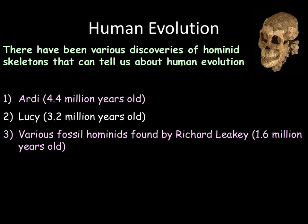There have been various discoveries of hominid skeletons over time that tell us about human evolution. For your GCSE you need to know about three different discoveries: the first is Ardy, whose skeleton dates to about 4.4 million years ago; the second is Lucy, whose skeleton dates to about 3.2 million years ago; and finally the discoveries by Richard Leakey of various fossil hominids whose skeletons date to 1.6 million years ago.